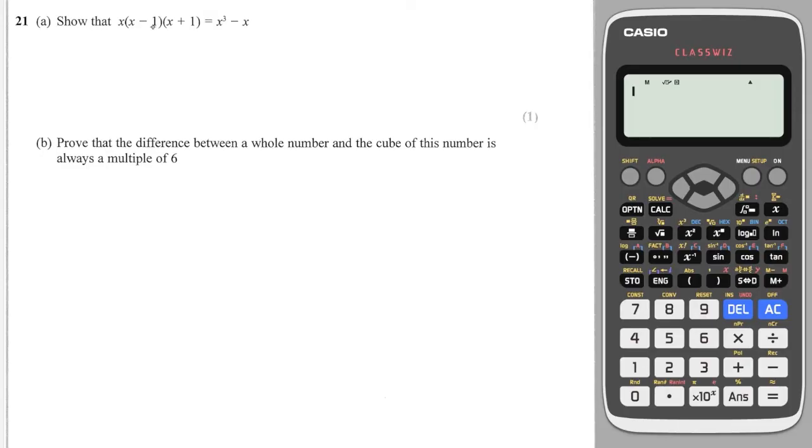Next question. It says show that this expands into that. So that's a show that question. For show that questions, what I tend to do is just cover up the answer, and then expand this using algebra. So I'm going to first expand the first two brackets and I'm going to get x squared minus x. And then I'm going to expand that by the third bracket, and that's going to give me x cubed plus x squared minus x squared and minus x, which is equal to x cubed minus x. And then have a look, is it the same as what they've asked? Yes, it is.